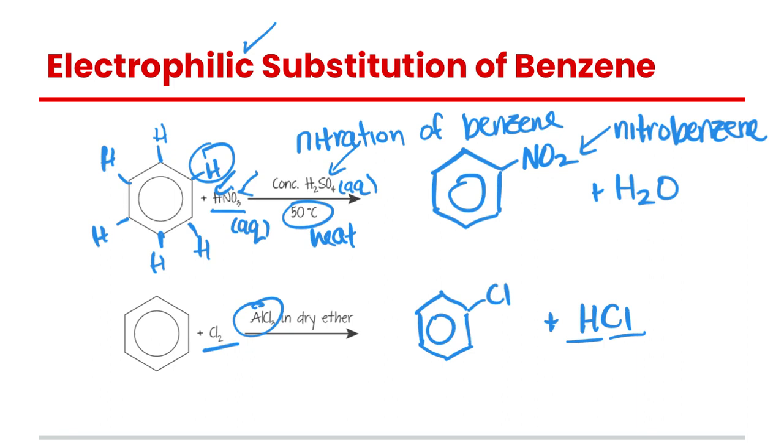If we were to react benzene with bromine we can do that as well. The catalyst for that reaction is iron III bromide and creates a very similar product, so instead of a chlorine we got a bromine and we've got HBr.